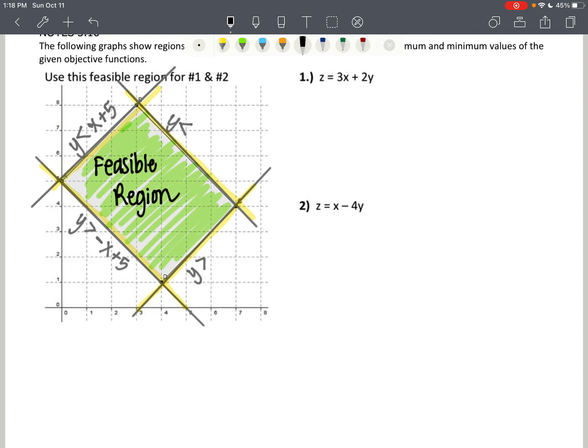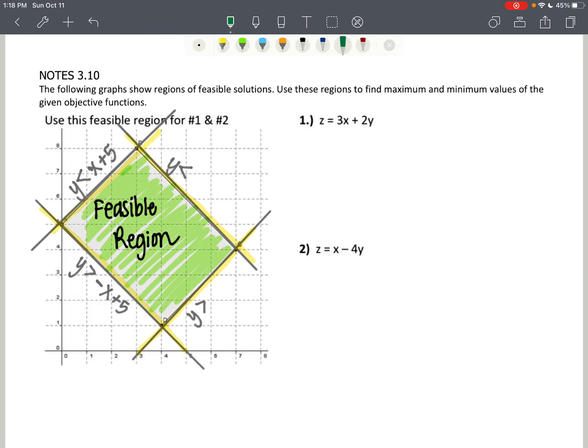We want to maximize and minimize, find the maximum and the minimum values of the given objective functions. So we're going to find the vertices of the feasible region. The vertices are, I'm going to start with the y-intercept 0, 5, and then I'm going to go clockwise. Then the next vertex is 3, 8, and then the next one is going to be 7, 4, and then the next one is 4, 1.